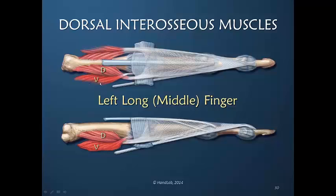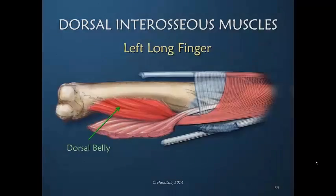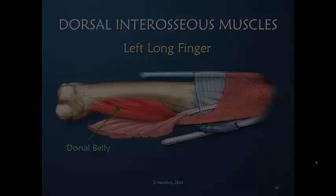We are looking at a dorsal belly and a volar belly of the dorsal interosseous muscles. Influence into the dorsal apparatus means that the dorsal belly must share its power of abduction with movement of the finger more distally.